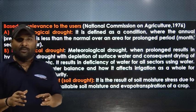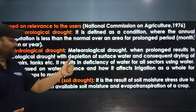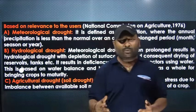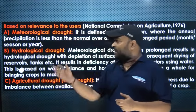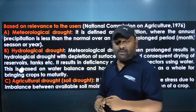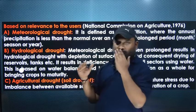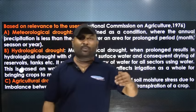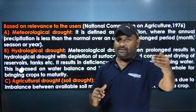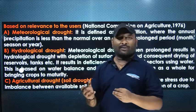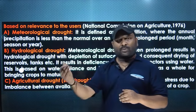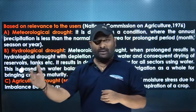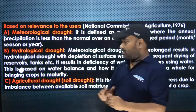When water bodies begin to dry up, we call it hydrological drought. If there is hydrological drought, the irrigation facility is affected. Hydrological drought occurs because of prolonged meteorological drought — when meteorological drought continues over a long period of time, the water table drops and water reservoirs dry up, reducing the irrigation facility.